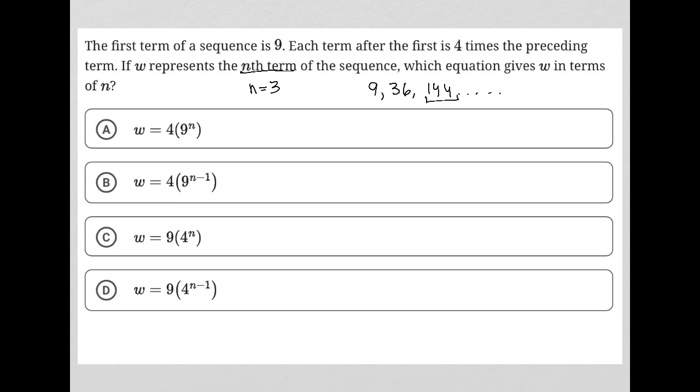Because when n equals 3, W should equal 144, right? Like that's what this tells me. And I could have gone further and said n is 4, n is 5, but I'm going to just stop here and say n is 3.